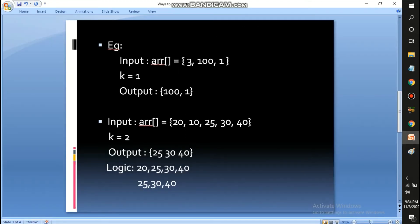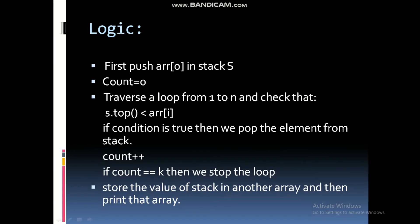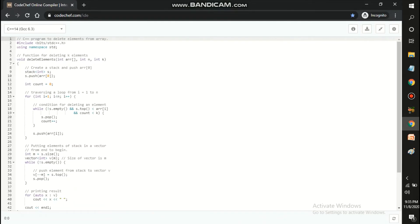The final output on the site also shows 25, 30, and 40. To recap the logic: push the first element array[0] into the stack and set count to zero. Then traverse the loop from index 1 onward. If the stack top is less than array[i], pop the top and increment count. Keep repeating until count equals k. Once count equals k, stop the loop and store the remaining stack values into another array and print it.